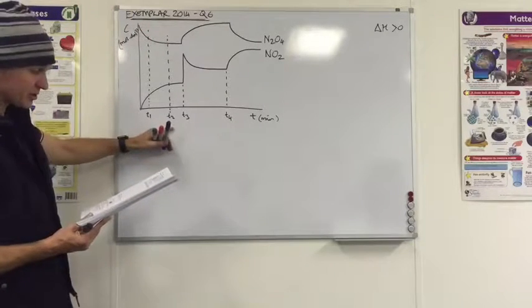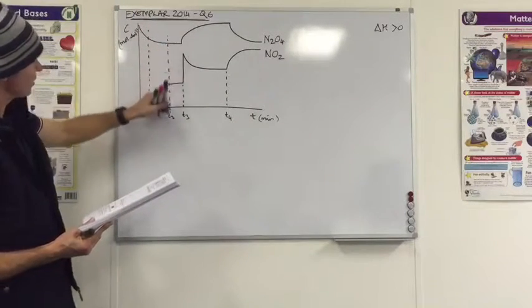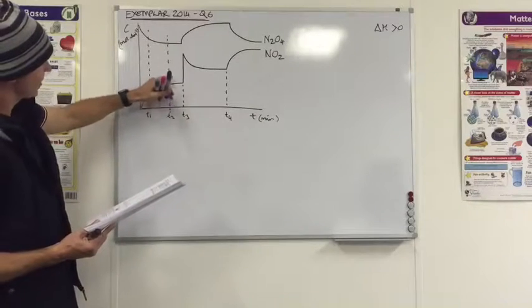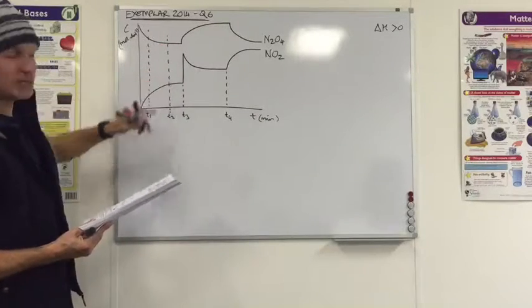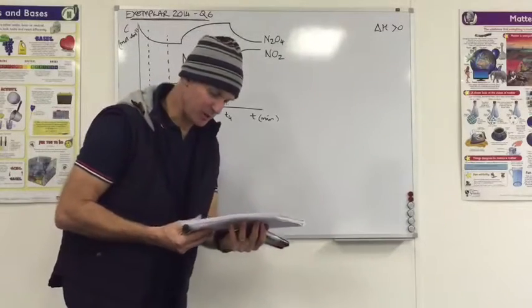At T2, which is the next question, by this stage, meant to be flatlining, so they should be equal to each other, because the system's in equilibrium.